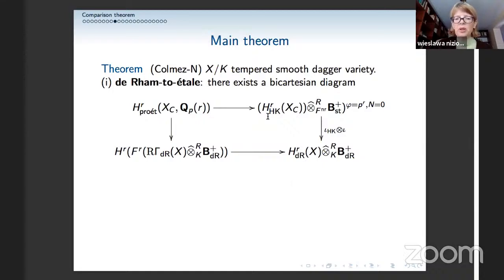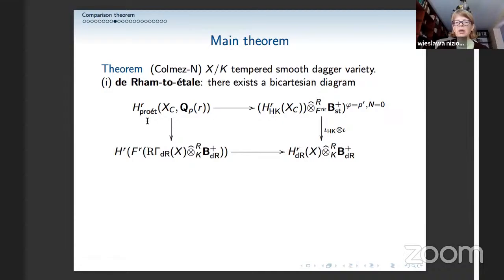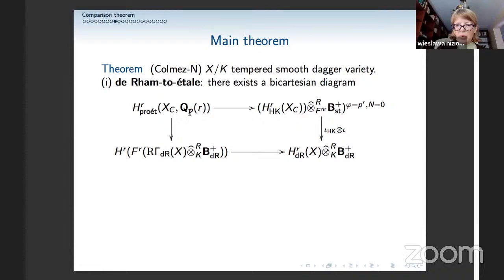The main theorem of these two papers is for what we call tempered smooth dagger varieties. In the first direction, recovering pro-étale from de Rham, we have a bicartesian diagram. The top arrow is as before: pro-étale cohomology and the Hyodo-Kato term. The bottom is more complicated: we have B_dR-plus cohomology and the derived filtered B_dR-plus cohomology — cohomology of the Hodge filtration of B_dR-plus. This diagram is bicartesian, giving a short exact sequence with pro-étale, then the sum of these two cohomologies, then this cohomology.